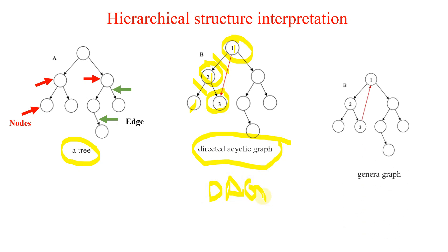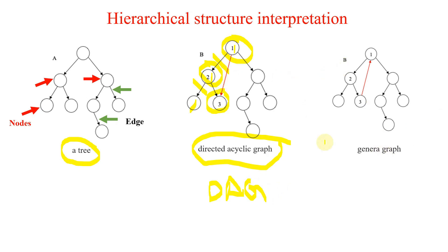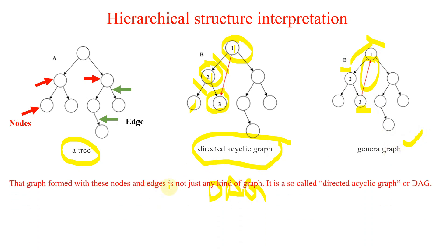Let me show you a general graph and how it differs from a DAG. In a general graph you can see there is one parent node, two child nodes, and three grandchild nodes, but the direction of the arrows is different, making a general graph rather than a DAG. The graph formed with nodes and edges in gene ontology is specifically called a directed acyclic graph. Do not confuse DAG with DEG — DEG is differentially expressed gene, while DAG is directed acyclic graph.